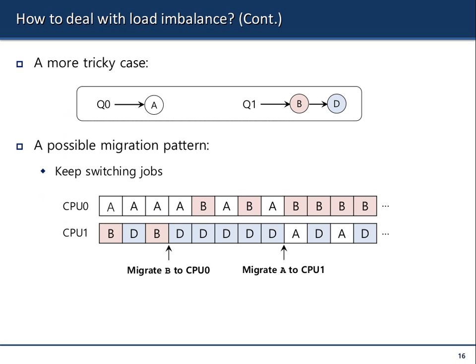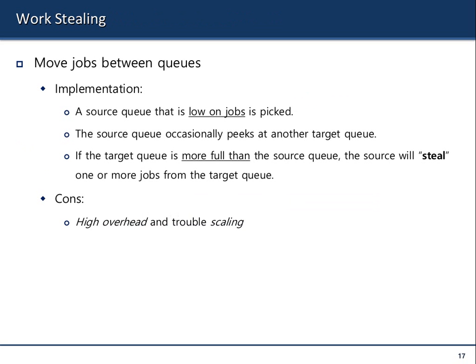The next question is: how does the OS determine which CPU is not loaded? One solution is called work stealing. A source queue that is low on processes occasionally picks another target queue. If the target queue is more full than the source queue, the source will steal one or more jobs from the target queue. That is the essence of work stealing.